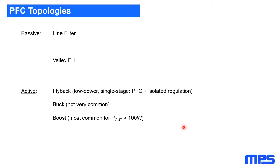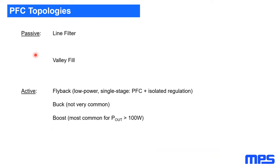There are several ways of doing this — passive or active. The simplest passive way is to use an input low-pass filter that forces the current to be sinusoidal at the frequency of the grid, 50 Hz or 60 Hz depending on where you are. It's very simple, but because of this low grid frequency, it means a large filter with large inductors — not always practical and also costly.